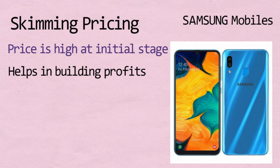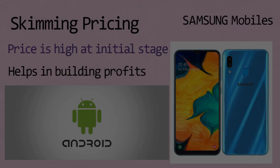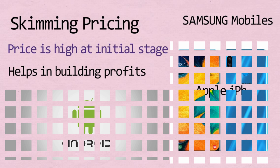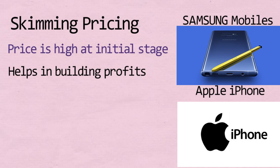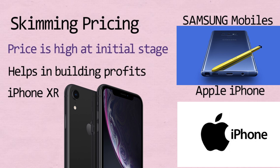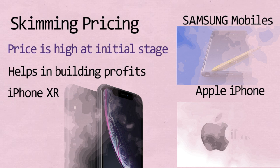The primary example of skimming pricing is Samsung mobiles — they initially keep prices high and reduce them in later stages once the model becomes old. Most Android smartphone makers use this strategy. Apple also uses skimming pricing: when they launch an iPhone, prices are very high initially and decrease later. For example, the iPhone XR was launched in 2018 at ₹74,000, and within a short period its price was reduced to ₹58,000.